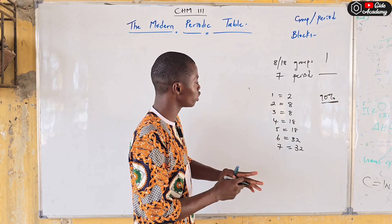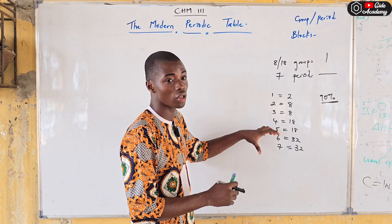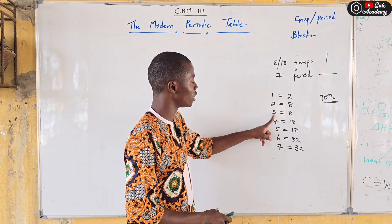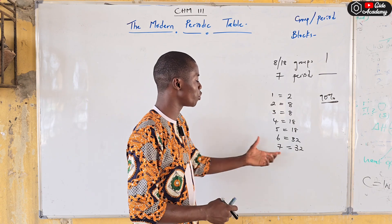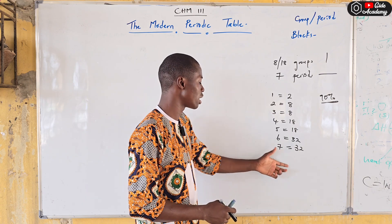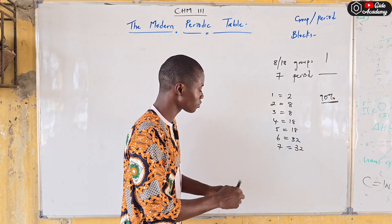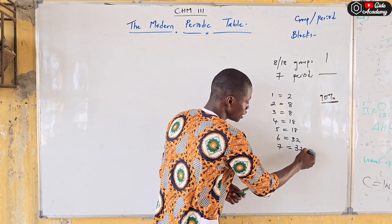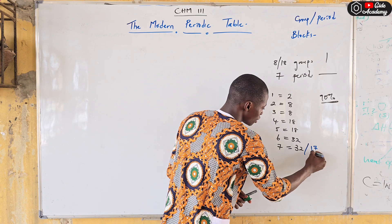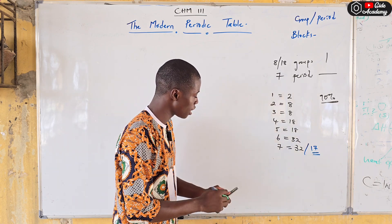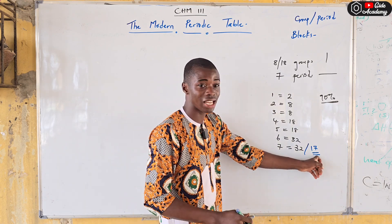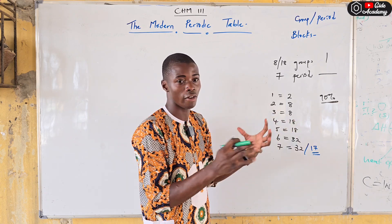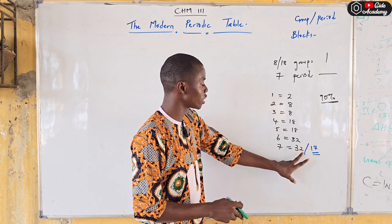The formula to remember is: 2, 8, 8, 18, 18, 32, 32. A question might come in this format: 'The third period has how many elements?' — the answer is 8. 'The seventh period has how many elements?' The theoretical answer is 32, but for those using the textbook at Delta State University Abraka, the answer is 17.